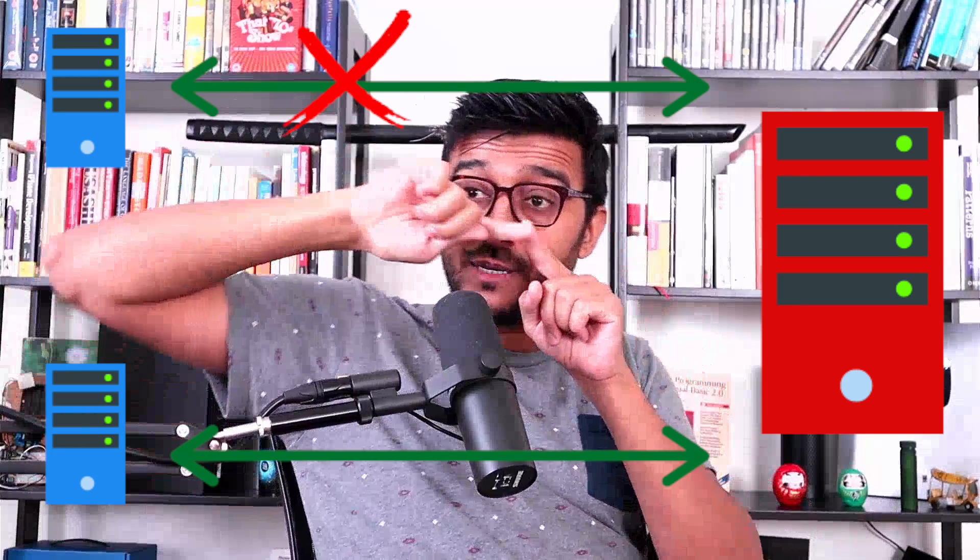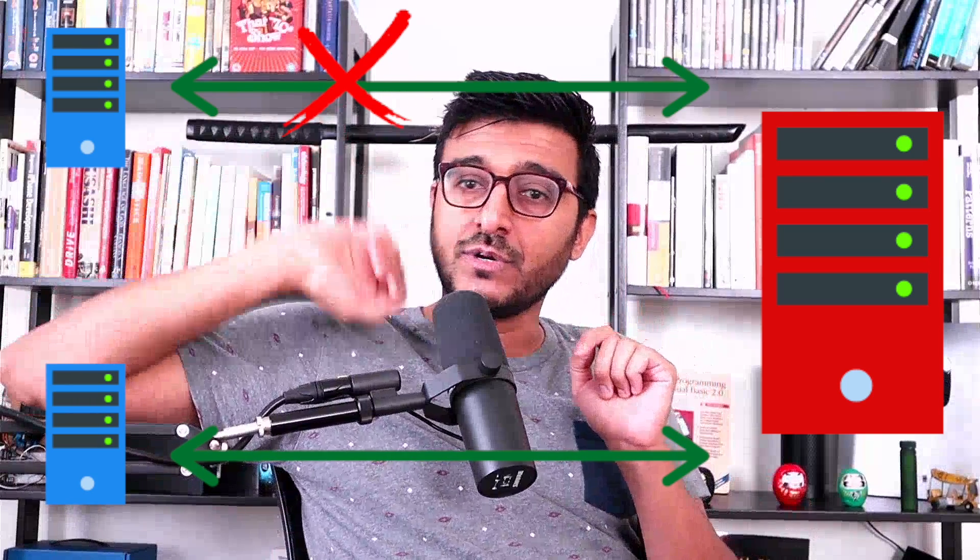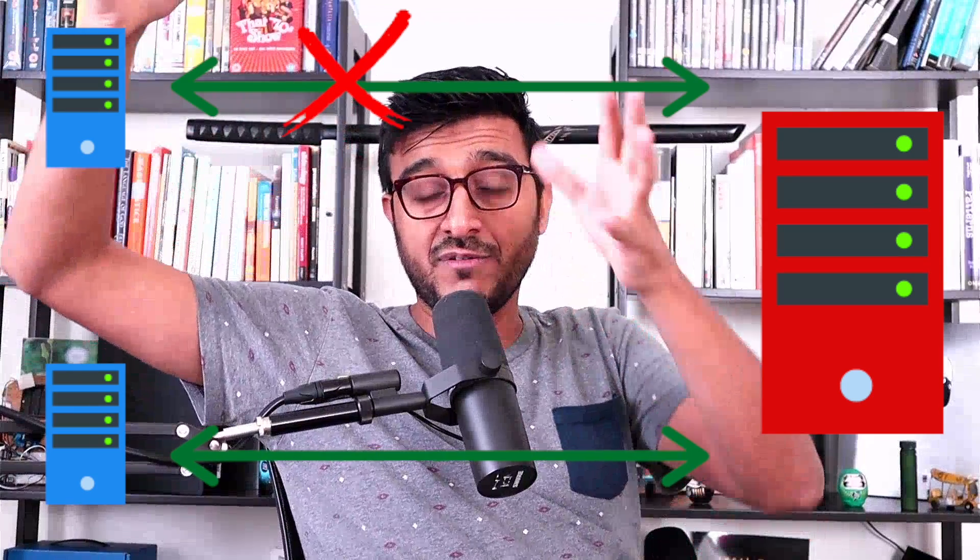The most confusing term is Partition Tolerance. Don't confuse 'partition' here with database partitioning — it has nothing to do with it. In CAP, a network partition is when you have a distributed system with multiple nodes that cannot talk to each other. When you have a master node and replicas that must communicate, there is a possibility of failure in that communication — that's what a network partition means.